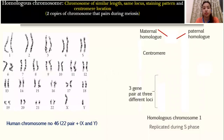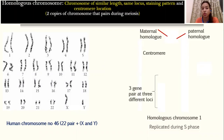First of all, we can start from the definition of what homologous chromosome means. Homologous chromosome means the chromosome having similar lengths, similar gene locations, similar gene position and staining pattern, and centromere location. All these characters define a homologous chromosome.